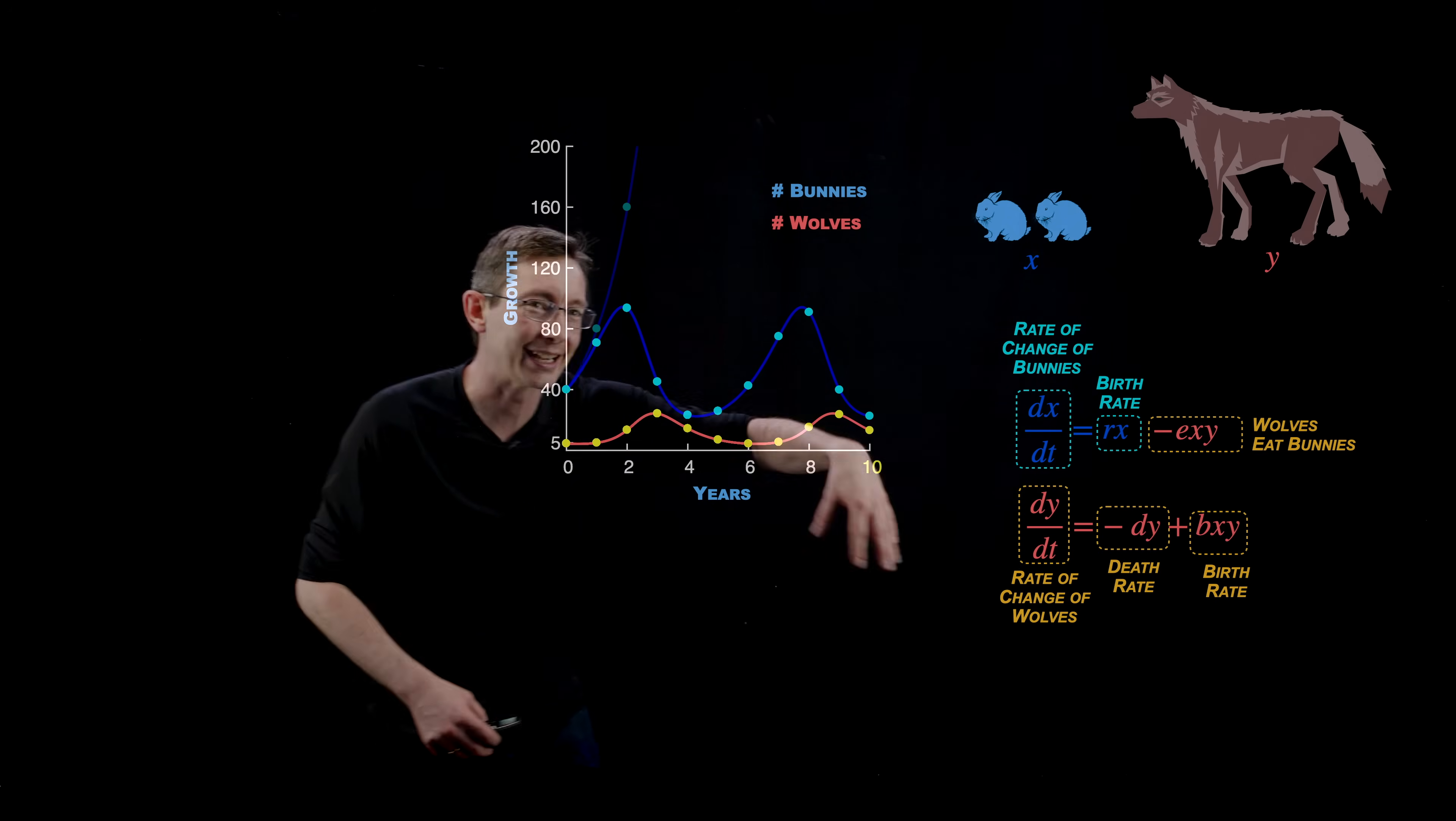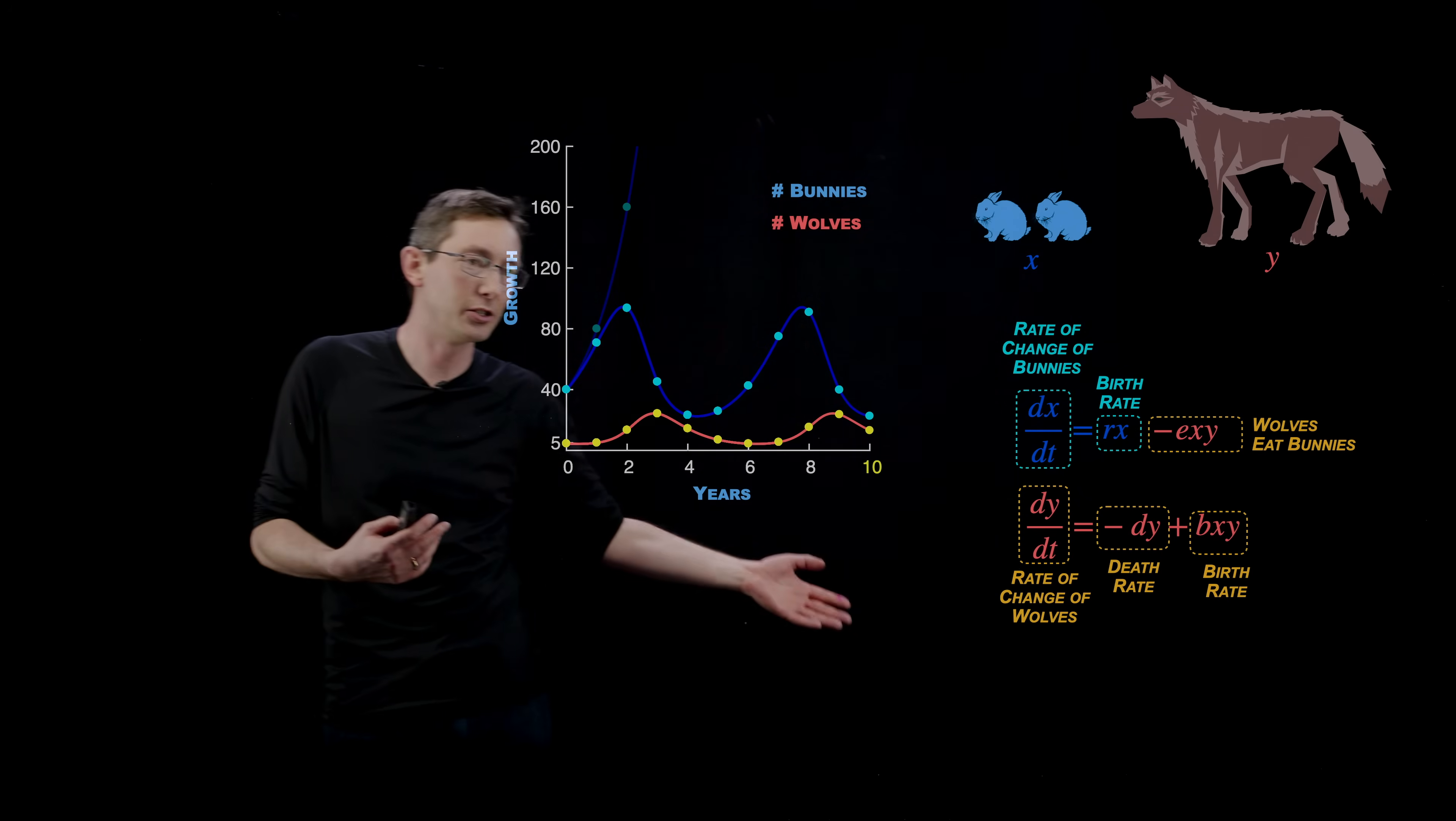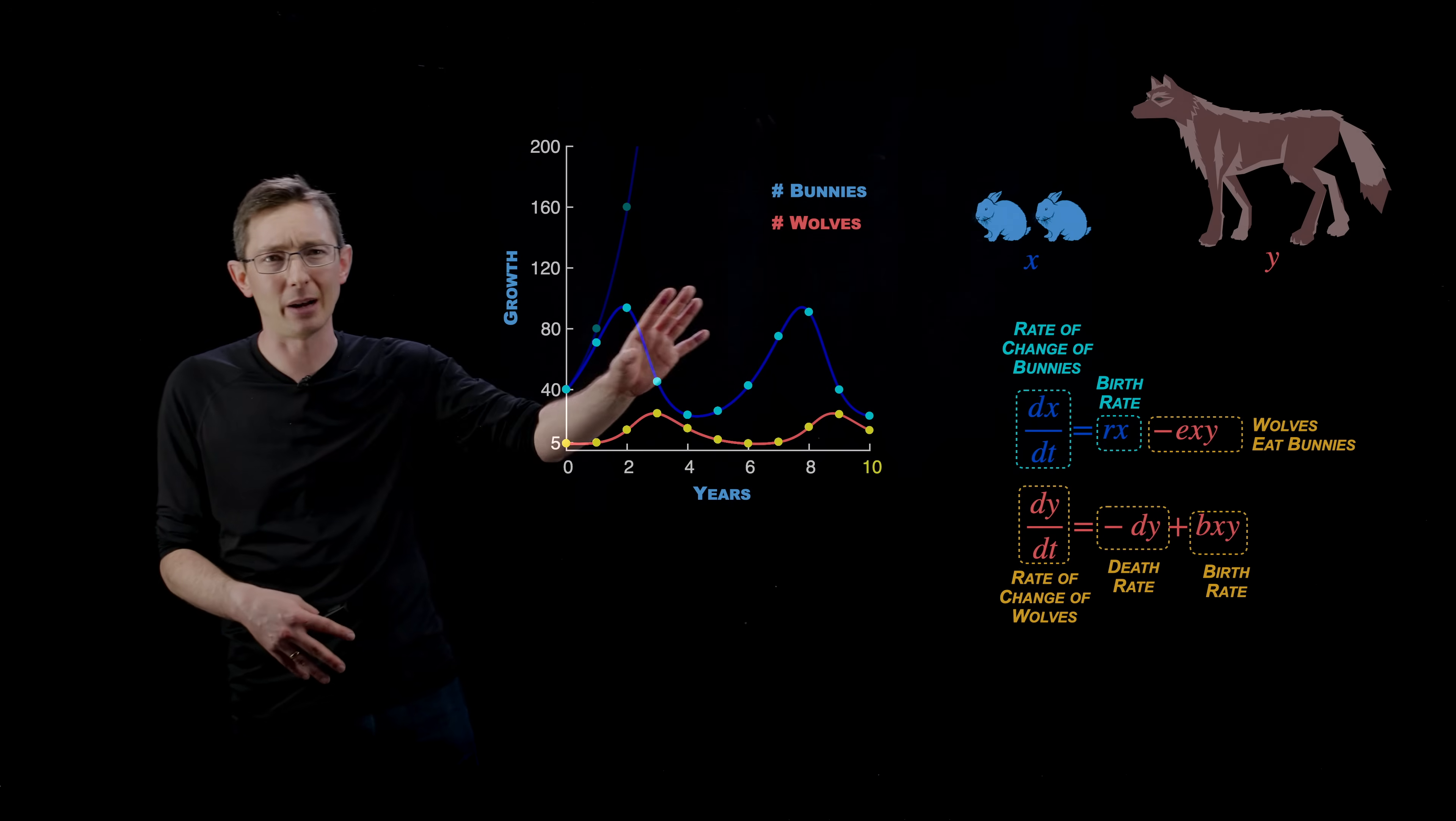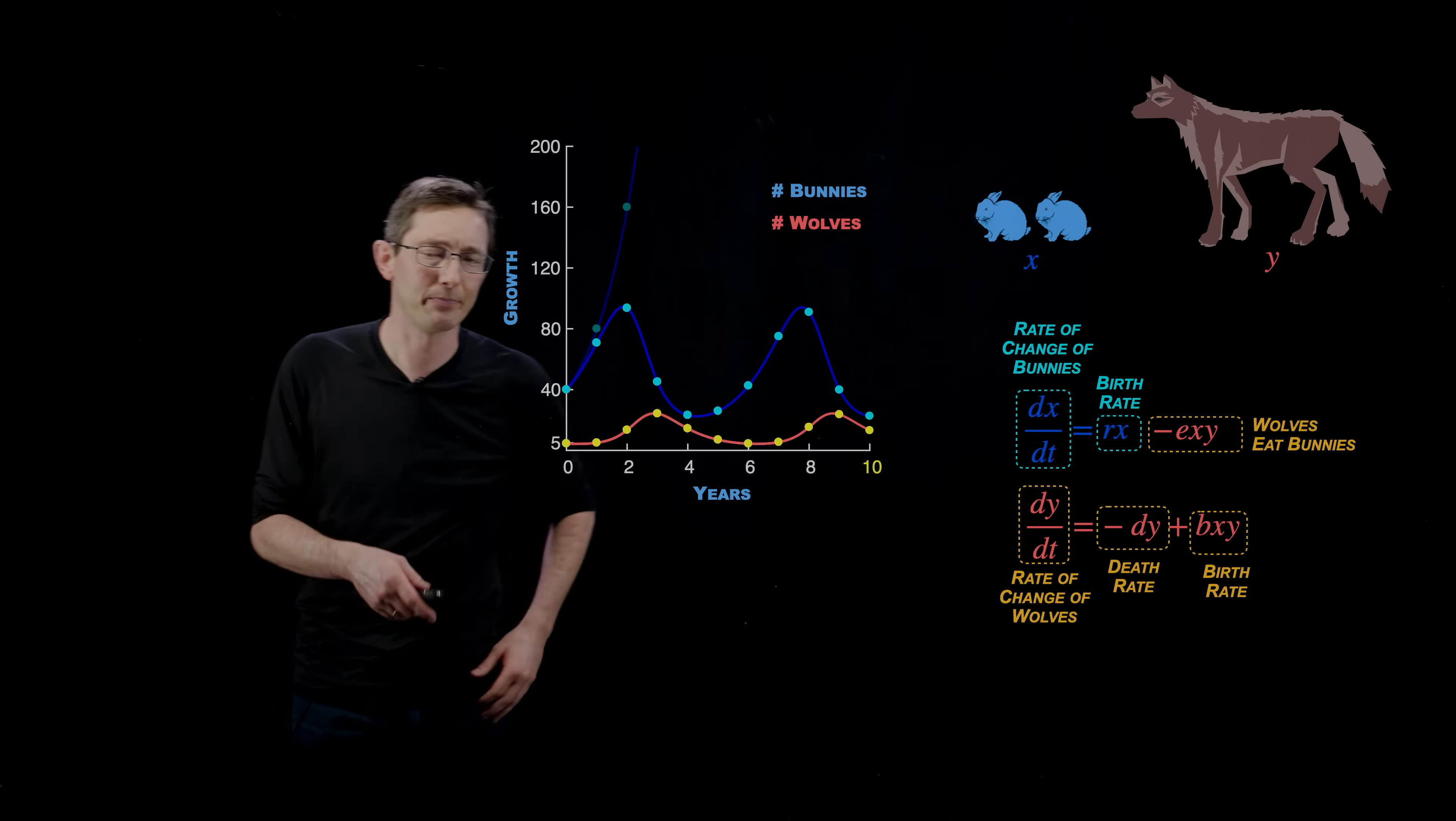Here you can also write this as a continuous differential equation, the rate of change of bunnies, the rate of change of wolves. This is actually how you write down the Lotka-Volterra systems as a continuous system. But I'm showing you it just evolving discretely year to year to make it simpler.